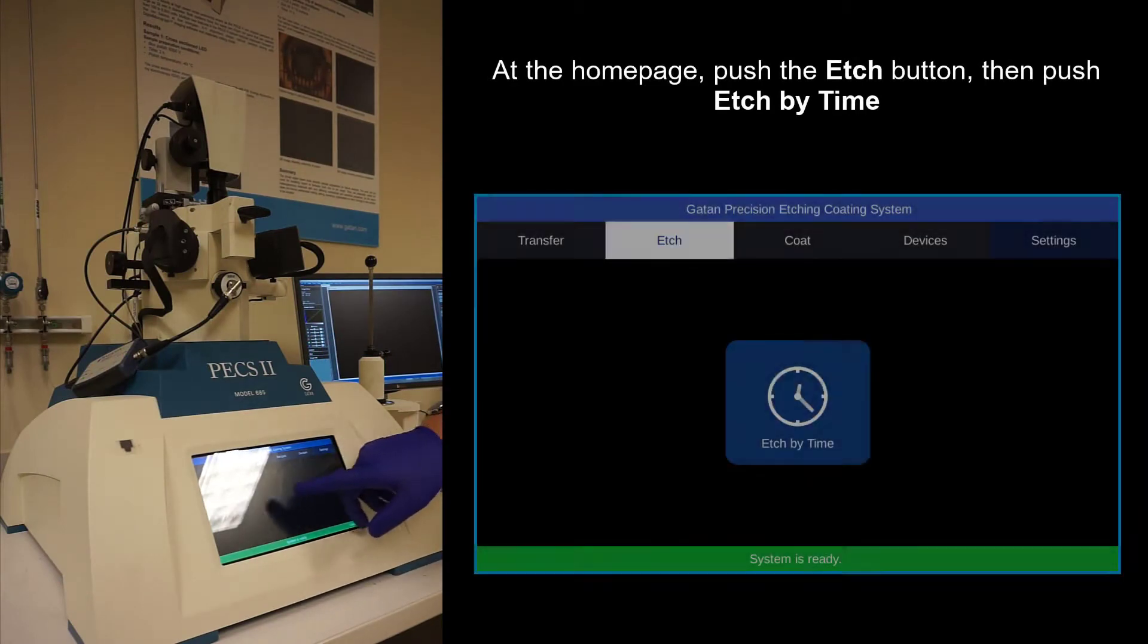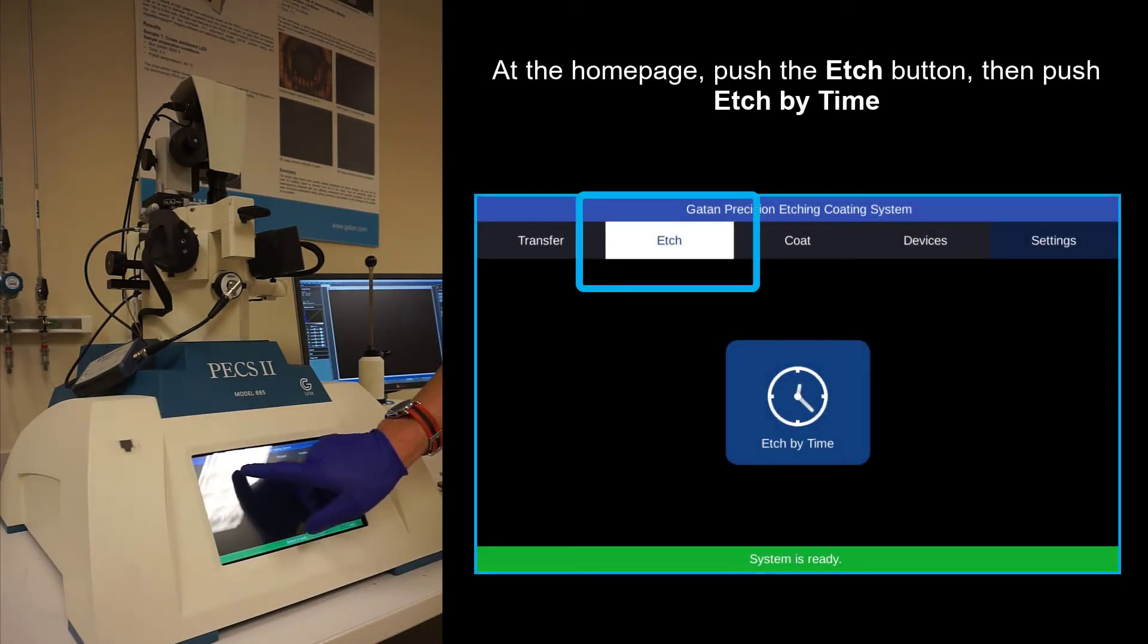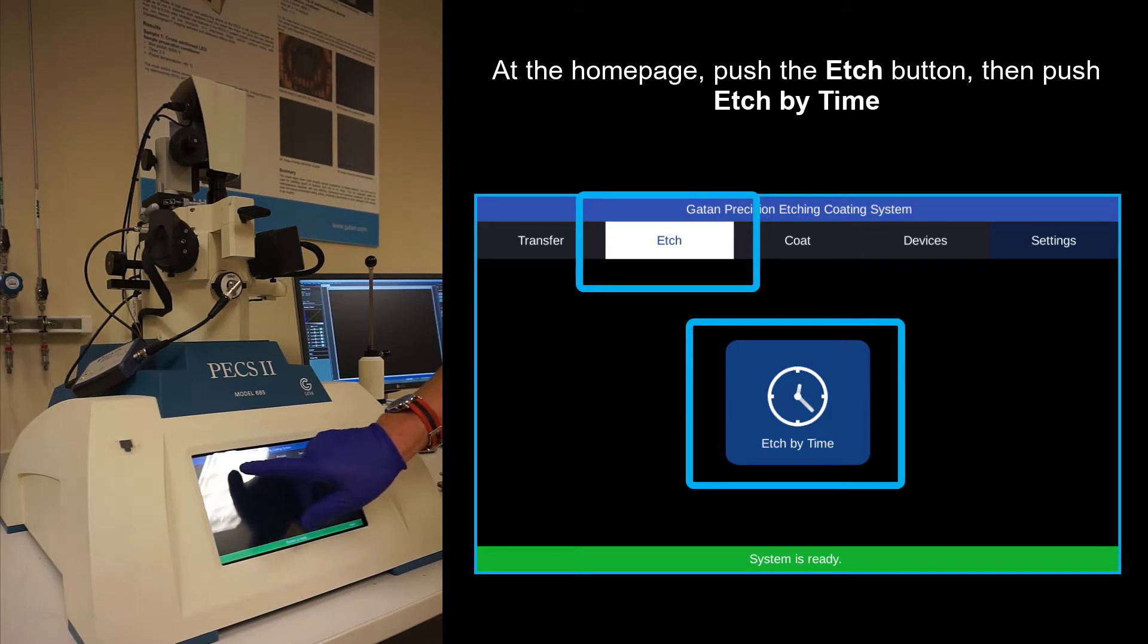Now when you want to align the sample, we're back on the home page here. Align at the etch position and say etch pipe.